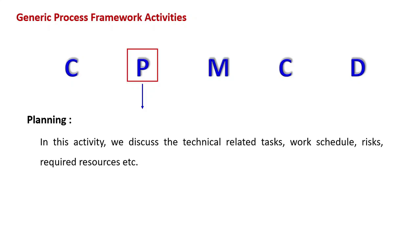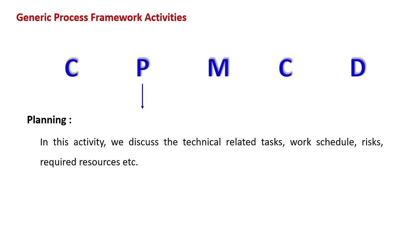Planning for the development of software is very important for software engineers so that they understand which technical tasks they want to complete, by when, how needs are met, and how to follow a schedule so that the software product can be delivered on time and the client will be happy. What resources will you need? How much will it cost? How much risk? You should have all this information under planning.